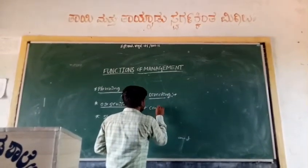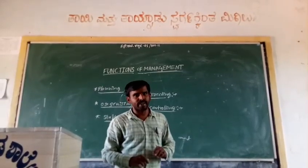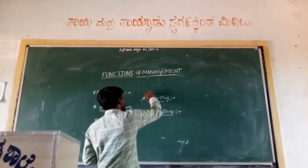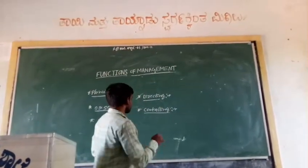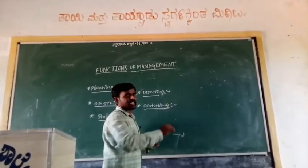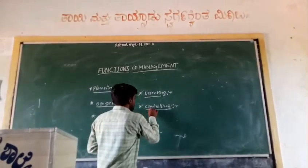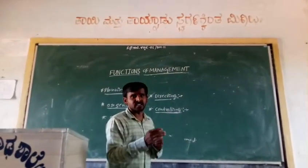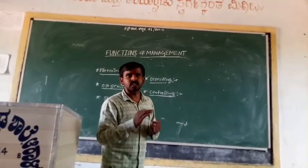The last function of management is Controlling. Once you have planned, organized proper resources, put the right people in the right places, and directed them, you are still supposed to monitor the work from time to time — whether the work is going in a proper manner or not. If you find any deviation taking place, you are supposed to take corrective actions. The controlling process involves setting standards, measuring actual performance, comparing actual with standards, and taking corrective actions if deviations are found.